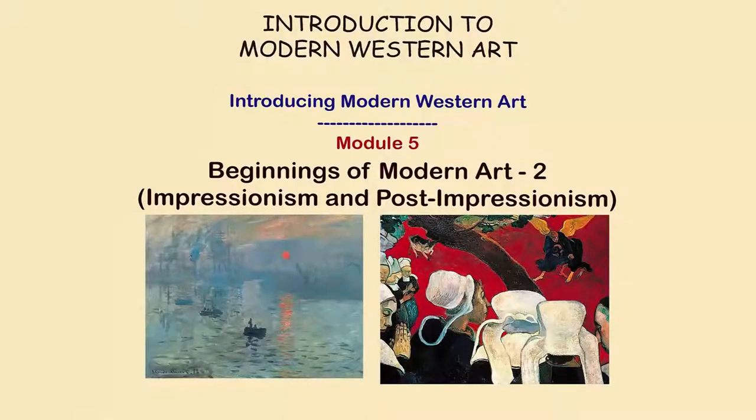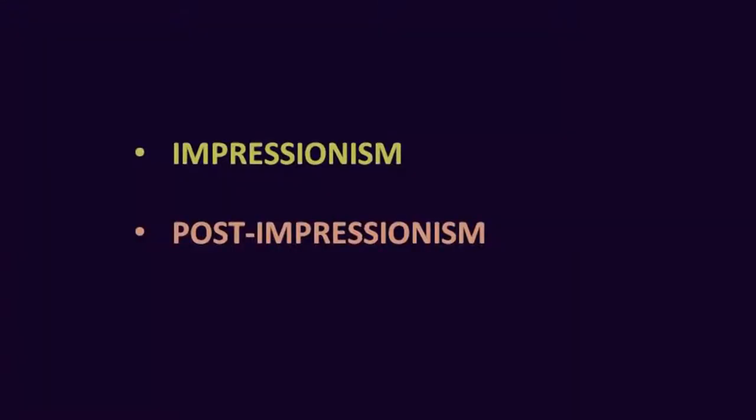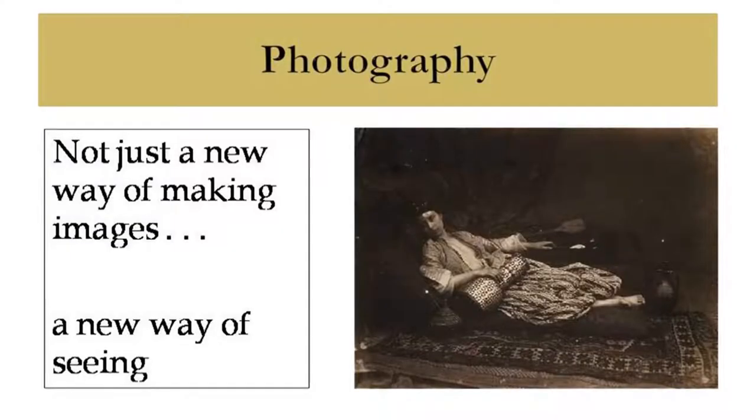Today we will be looking at two very significant art movements which took place in the 19th century and a bit of the early 20th century as well, called Impressionism and Post-Impressionism. These two movements are not necessarily a kind of organized art movement; they simply happened in response to certain situations that developed in the Western world, particularly during the mid and late 19th century.